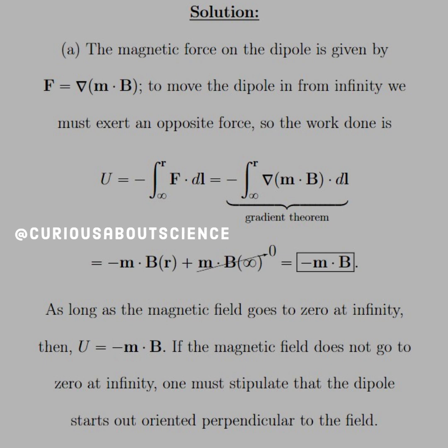If the magnetic field does not go to zero at infinity, one must stipulate that the dipole starts out oriented perpendicular, therefore the dot product is zero in the field.